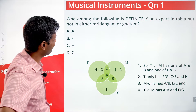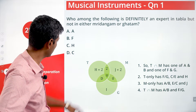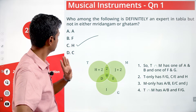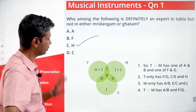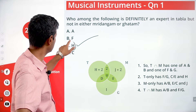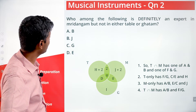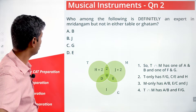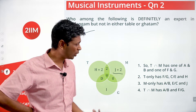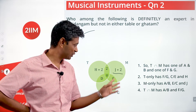Question: Who among the following is definitely an expert in Tabla but not in either Mridhangam or Ghatam? Tabla only contains H plus two others. A need not be here — A is either here or in the intersection. F need not be here either. H has to be here. C need not be here. So the only one we can be sure of is H.